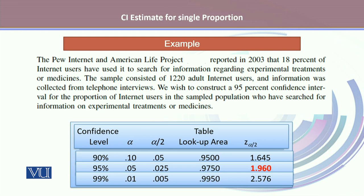Let's take an example. The Pew Internet and American Life Project reported in 2003 that 18% of Internet users had used it to search for information regarding experimental treatments or medicines. The sample consisted of 1,220 adult Internet users and information was collected from telephonic interviews. We wish to construct a 95% confidence interval for the proportion of Internet users who have searched for information on experimental treatment or medication.